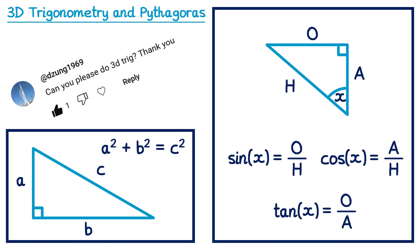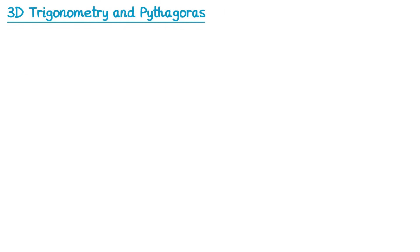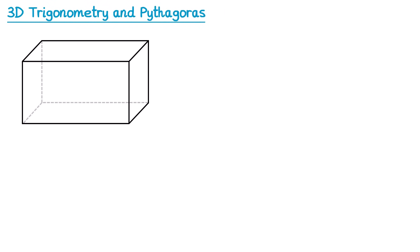If you aren't comfortable with either of these topics I'd suggest you go and revise those first — I'll put some links in the video's description. For this topic the most common shape in exam questions is a cuboid. We can label the vertices of this cuboid A, B, C, D, E, F, G, H. In all of the questions we're going to look at we're going to need to find two-dimensional right-angled triangles, and there are loads that you can find in this shape.